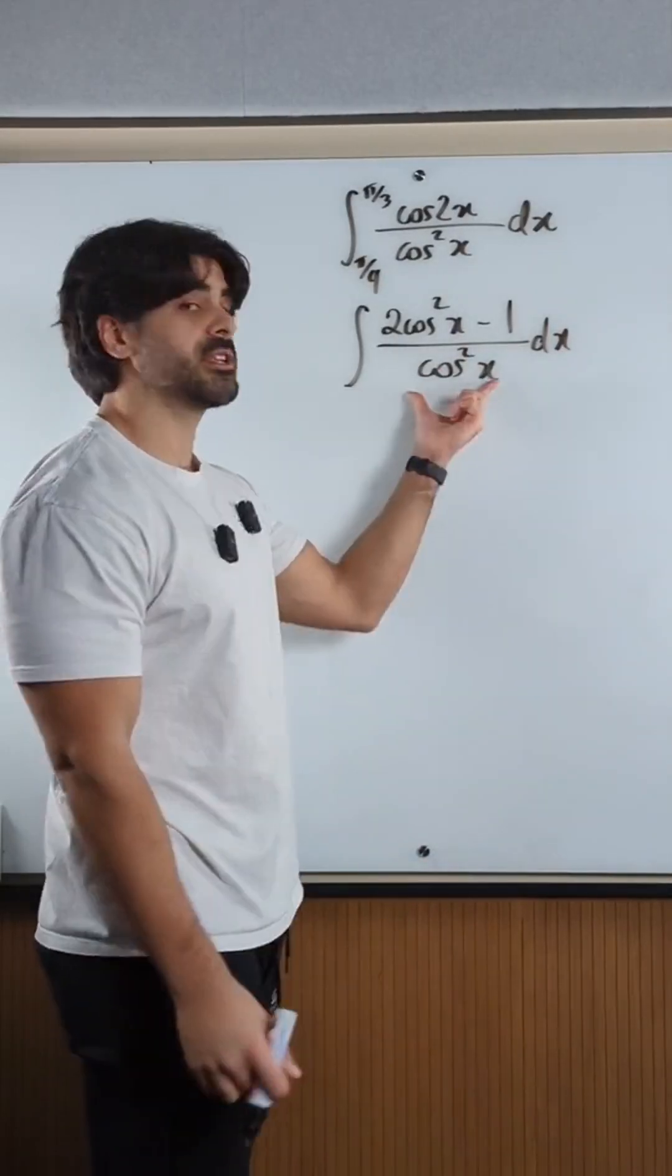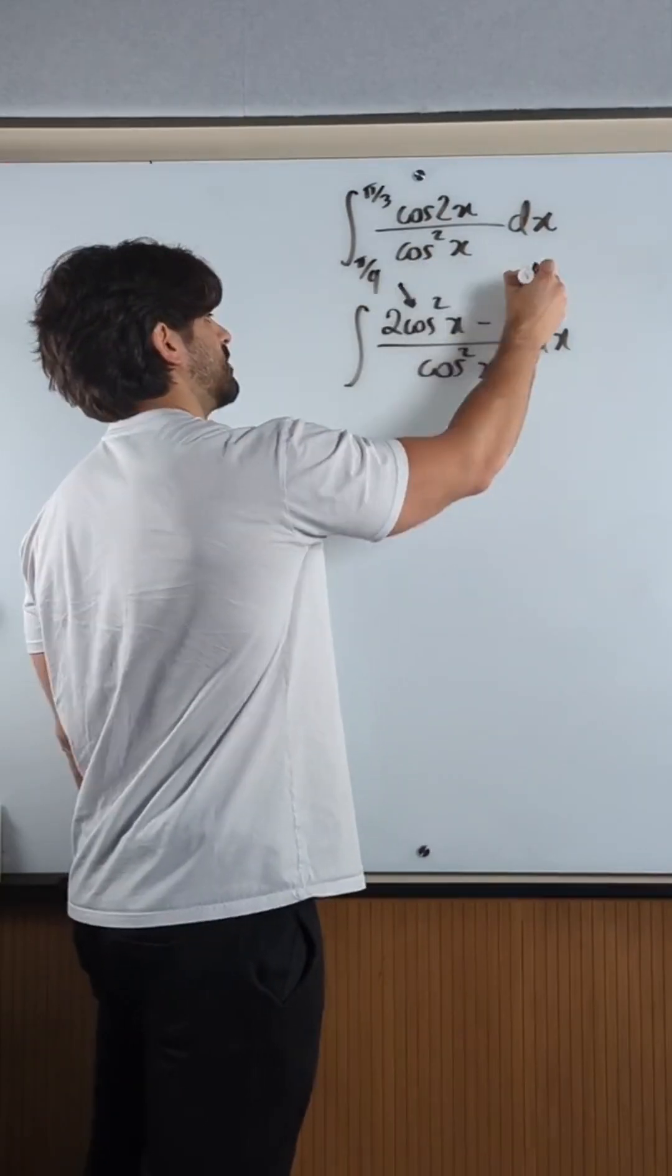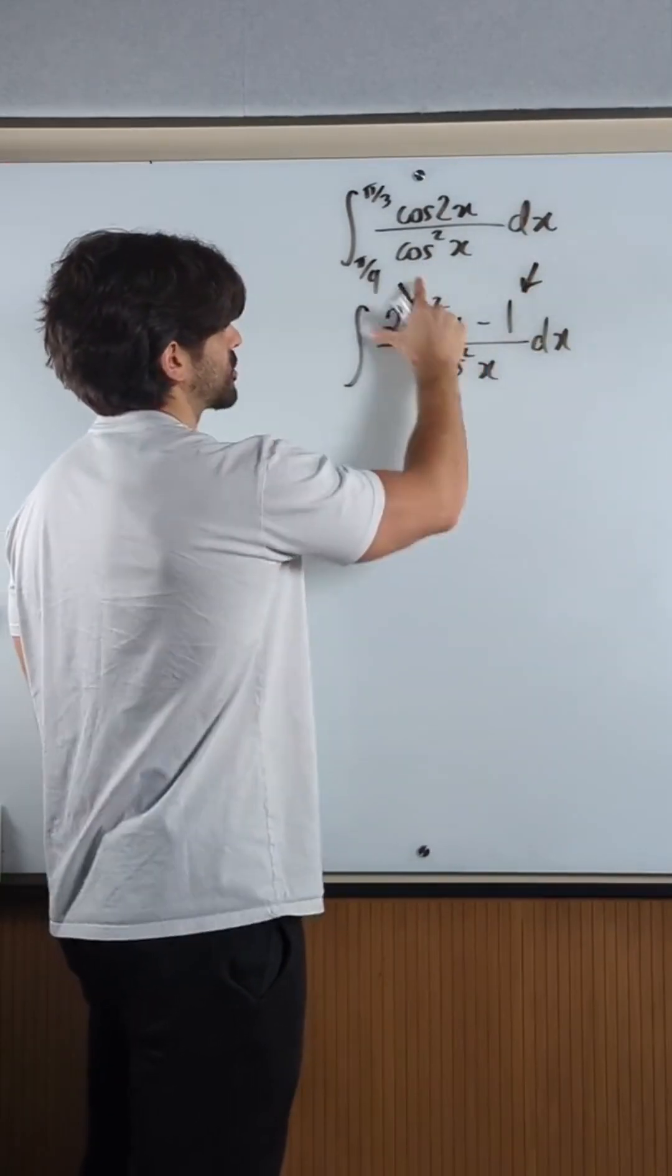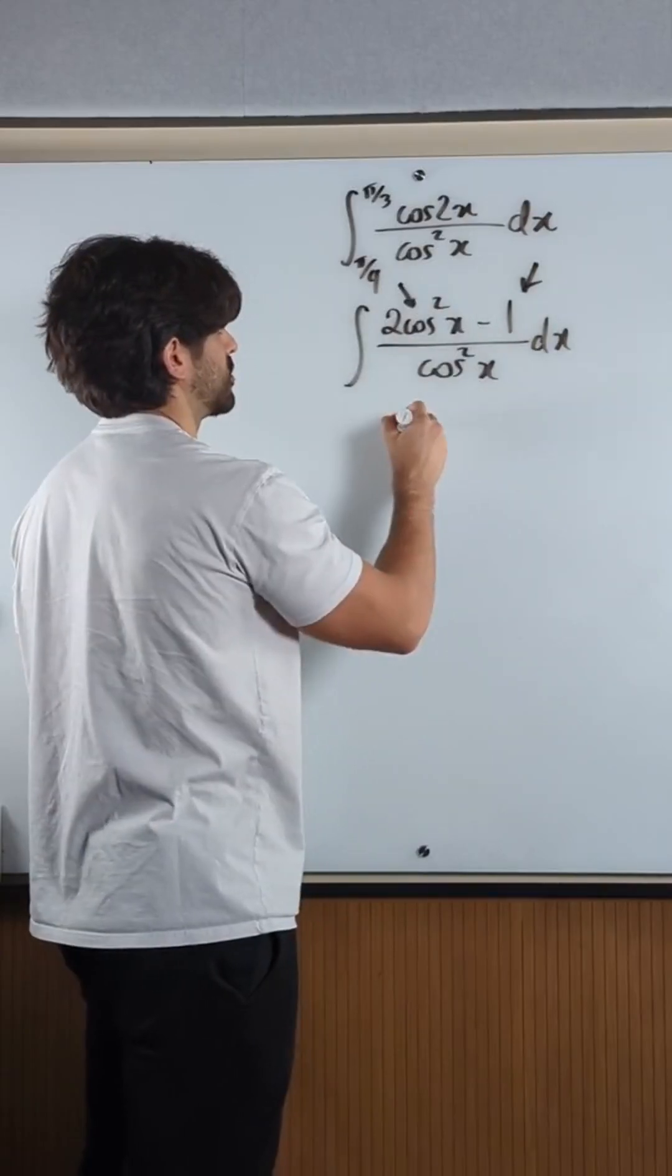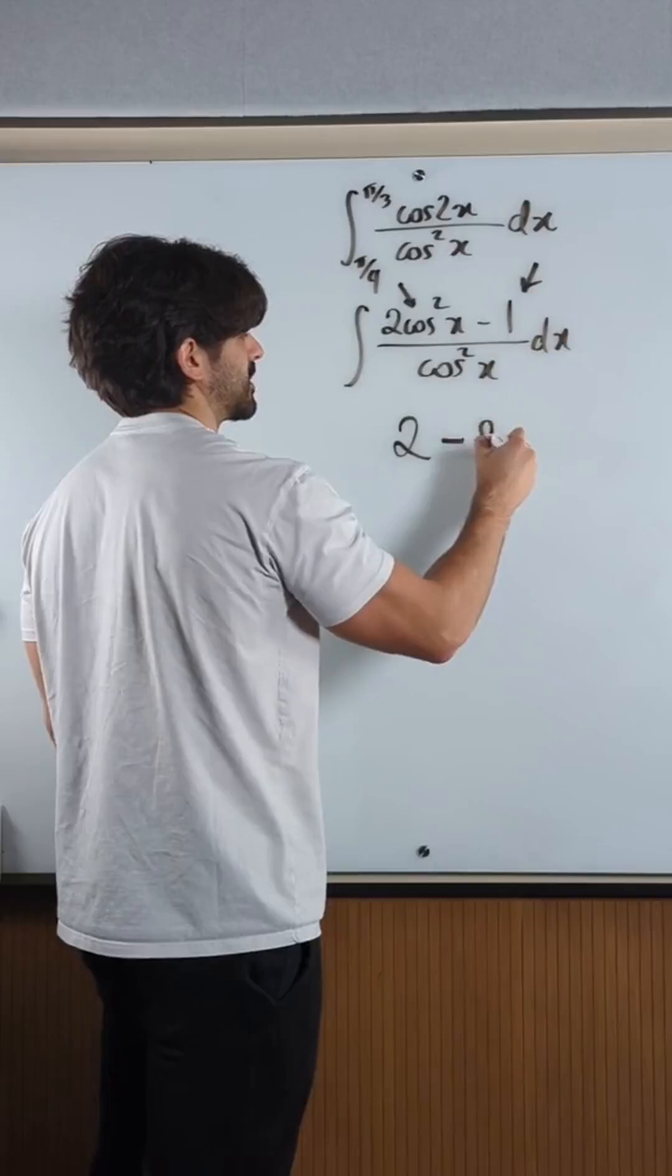That is good. There's one term in the denominator. I mean it doesn't matter how many terms are in the numerator. Let's split the fraction. So, I'm going to do 2cos²x divided by cos²x, which is just 2, minus 1 over cos²x, which is sec squared.